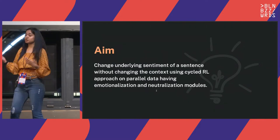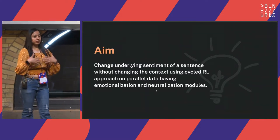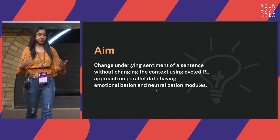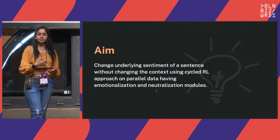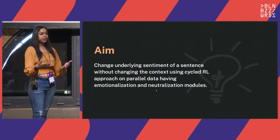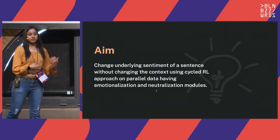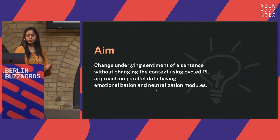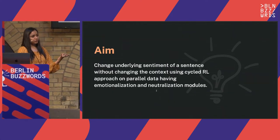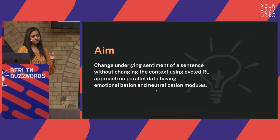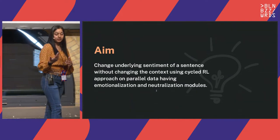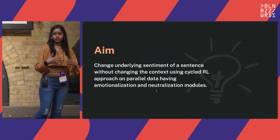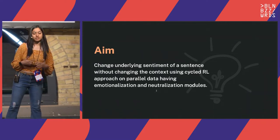This is why we need to use a reinforcement learning method, which is now being applied in natural language processing and computer vision, apart from robotics. We will see how that works. Because it is about sentiments, we will be using two different modules: an emotionalization module, which will take care of changing the style, and a neutralization module, which will help us preserve the context of the sentence.